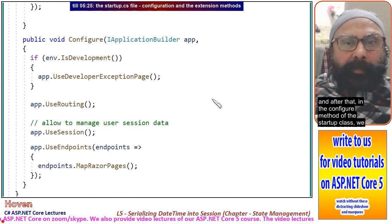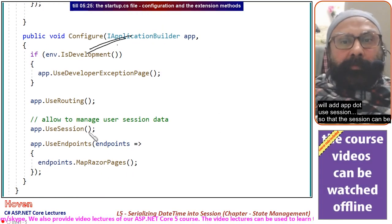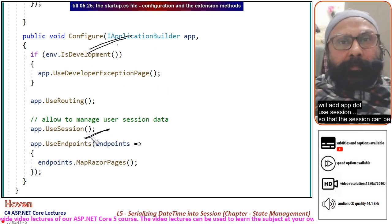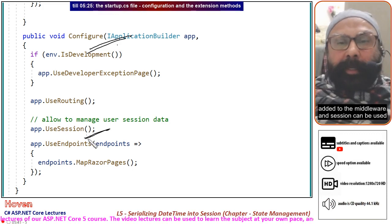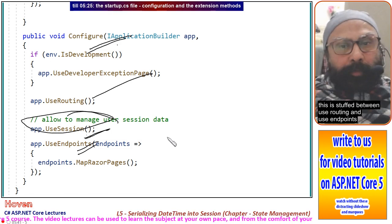And after that in the Configure method of the startup class we will add app.UseSession so that the session can be added to the middleware and session can be used. This is placed between UseRouting and UseEndpoints.